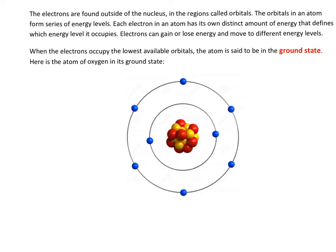The atom is made of a nucleus and electrons. The nucleus is made of protons and neutrons. Protons carry a positive charge of plus one, and neutrons do not have any charge. Electrons are found outside of the nucleus in regions called orbitals. The orbitals in an atom form a series of energy levels, and each electron has its own distinct amount of energy that defines which energy level it occupies. When electrons occupy the lowest available orbitals, the atom is said to be in the ground state.